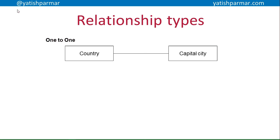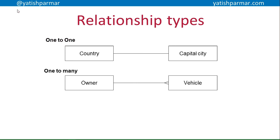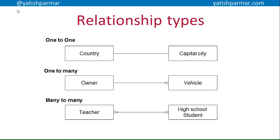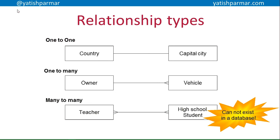We use crow's feet notation. You have a one-to-one relationship — for example, a country entity and a capital city entity, there is a one-to-one relationship between countries and capital cities. There is a one-to-many relationship between owners and vehicles, because one owner may have many vehicles. The crow's foot on the vehicle side indicates that there are many vehicles. And then you can have many-to-many relationships — for example, many teachers have many students in a high school. There's a problem with that last one because it cannot exist in a database, and we'll look at that in more detail.